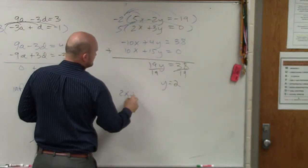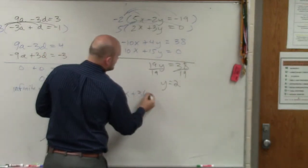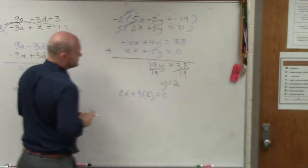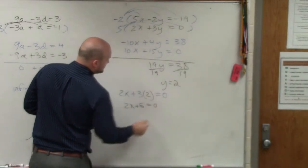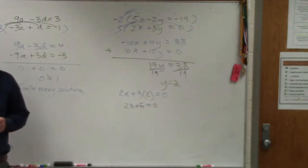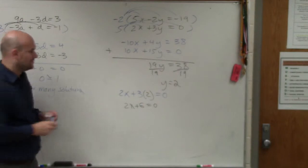So I have 2 times x plus 3 times y, which we're going to replace with 2, equals 0. So therefore, I have 2x plus 6 equals 0. Is it OK if I skip two steps and give you the solution? We're all at that point.